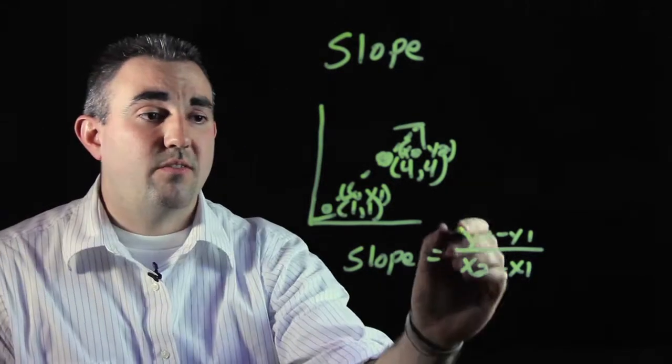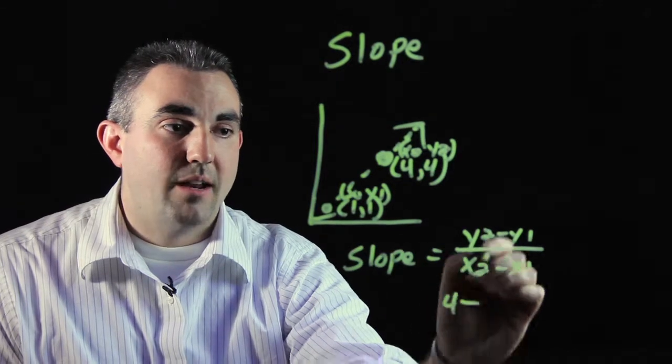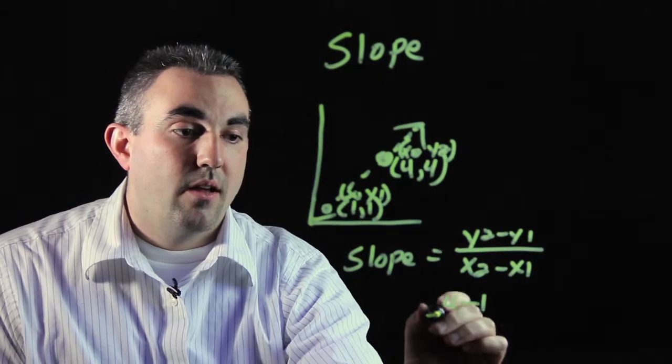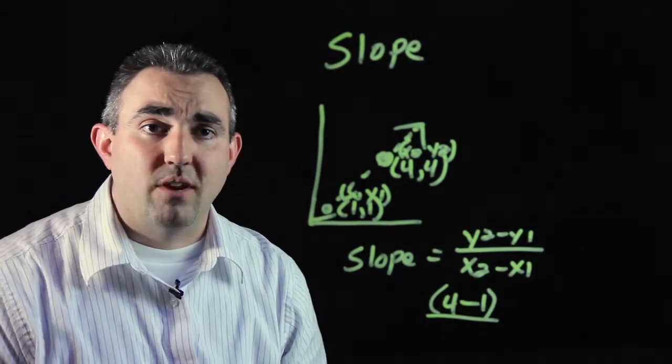So what you want to do on your calculator is you want to find point y2 and type the number 4 into your calculator minus y1, which is 1. Put that in parentheses if you have a calculator that has parentheses for you.